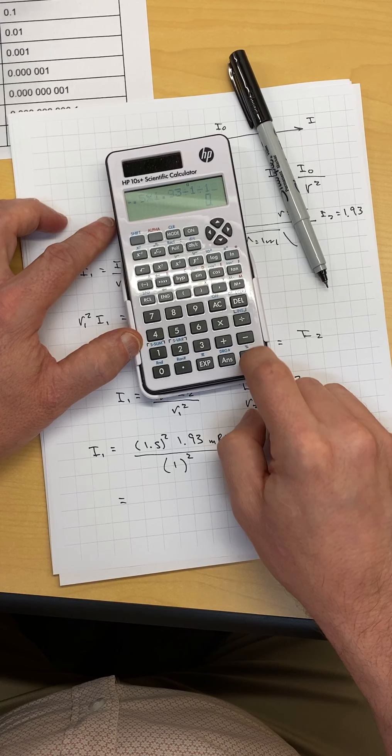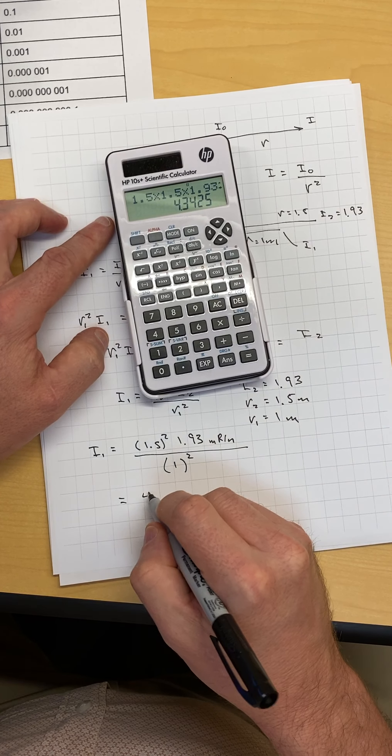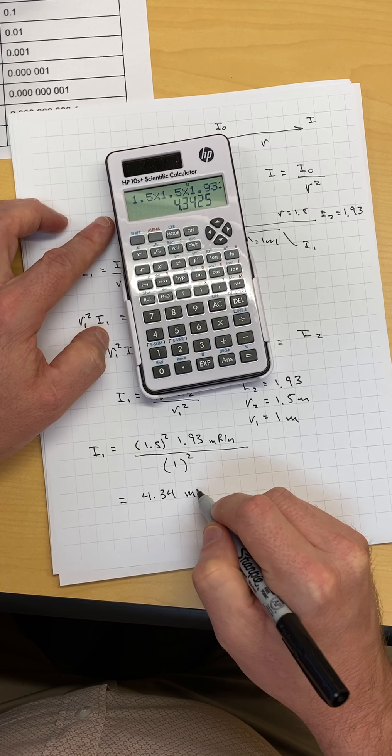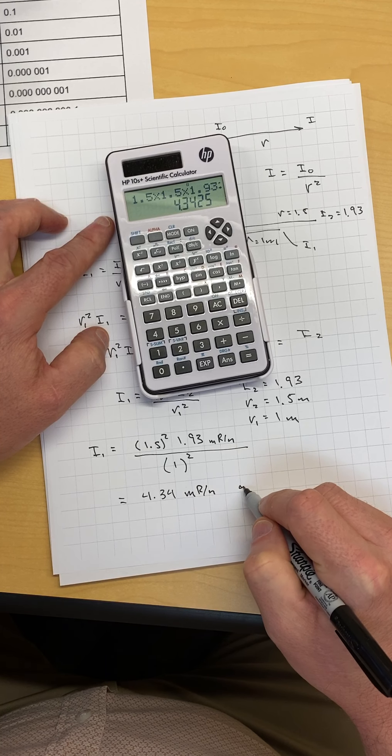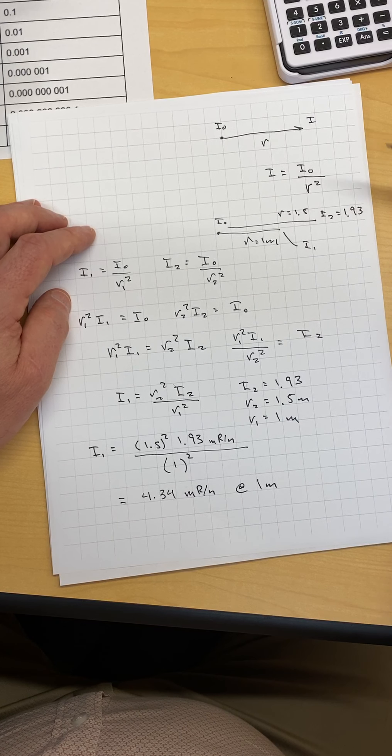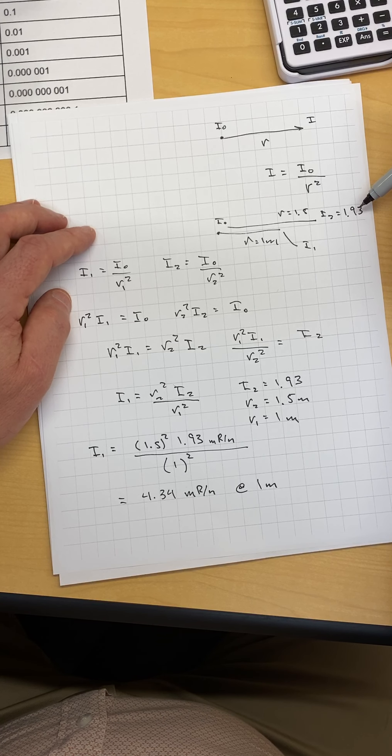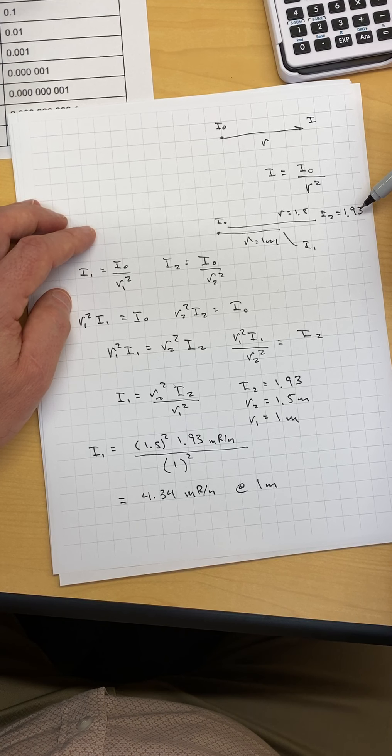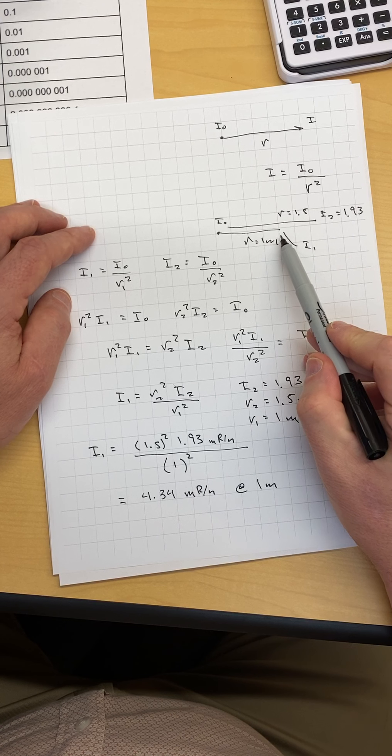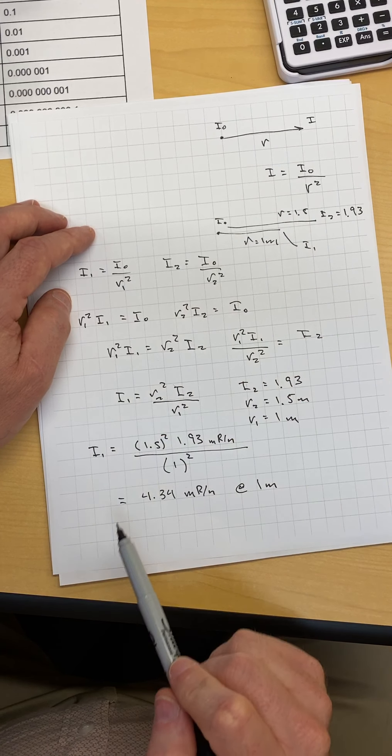1.5 squared times 1.93 divided by 1 squared equals 4.34 milliroentgens per hour at 1 meter. So if we were to have a reading of 1.93 milliroentgens per hour at 1.5 meters, and we wanted to know what the reading was at 1 meter, we can run through this equation.